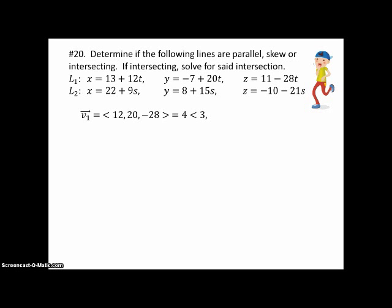Okay, so first we'll look at V1, which consists of the coefficients of T in L1, and V2, which consists of the coefficients of S in L2. And notice that if we factor out a 4 from the first one and a 3 from the second one, we have indeed parallel vectors, and therefore the lines are parallel.